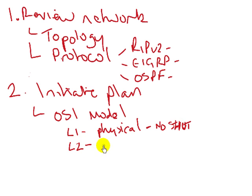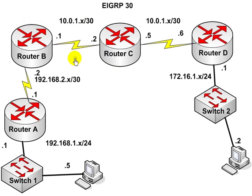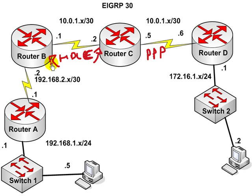Layer 2: is there a clock rate? If there's no clock rate on the DCE cable, no traffic will pass — this is for serial interfaces obviously. Also encapsulation: both sides of a WAN interface should have the same encapsulation to communicate. It's perfectly permissible to have HDLC on one link and PPP on another, but you can't have HDLC on one side and PPP on the other side of the same link. That won't work — it's like a Japanese person trying to speak to a French person in Japanese.